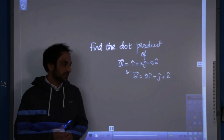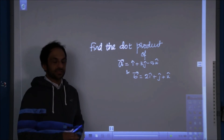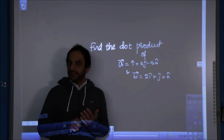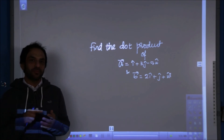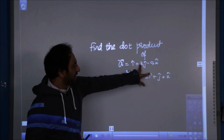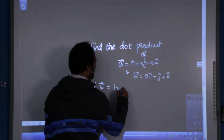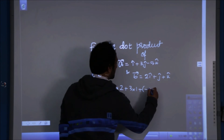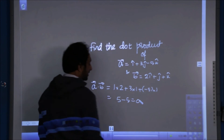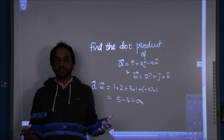Example: Find the dot product of two vectors where A = I + 3J − 5K and B = 2I + J + K. Using the formula A1B1 + A2B2 + A3B3, we get A dot B = (1)(2) + (3)(1) + (−5)(1) = 2 + 3 − 5 = 0. Since the dot product is 0, we can comment that the vectors are perpendicular.